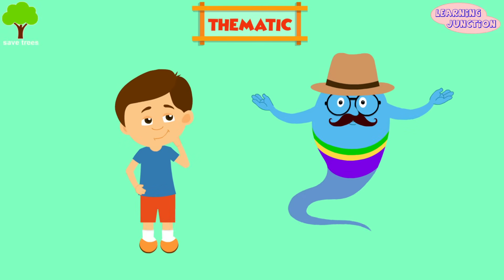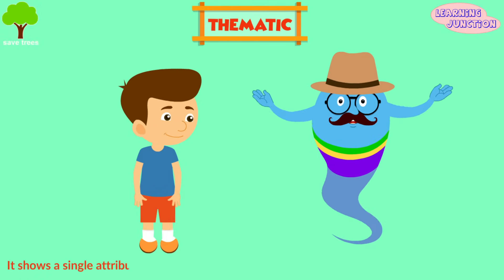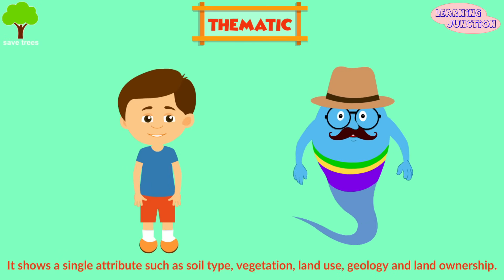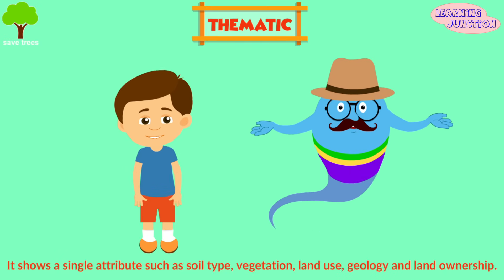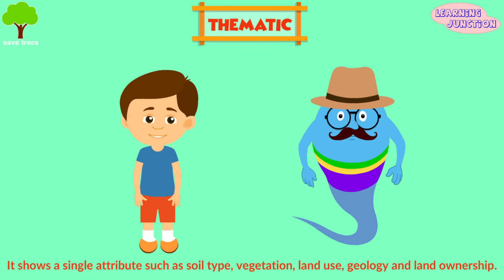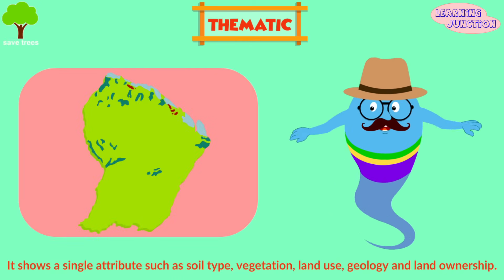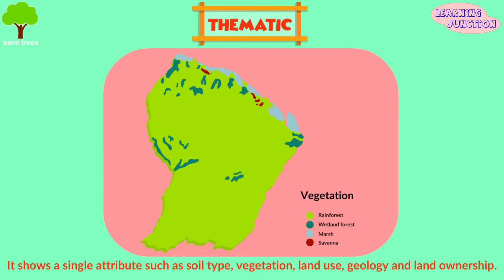Thematic — a thematic map shows a single attribute such as soil type, vegetation, land use, geology and land ownership. For example, this French Guiana map shows the vegetation areas, the rainforest areas, the wetland forest, marsh and savanna.